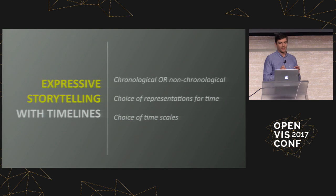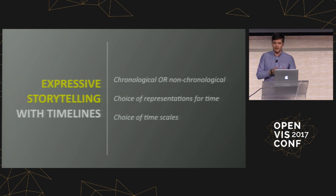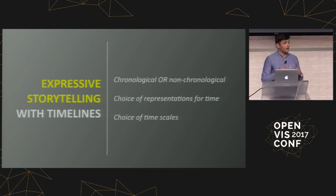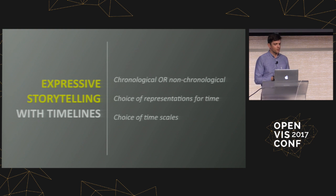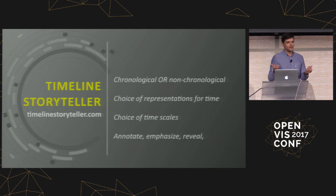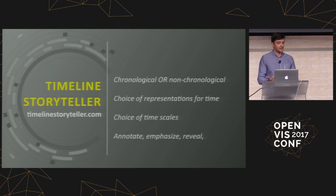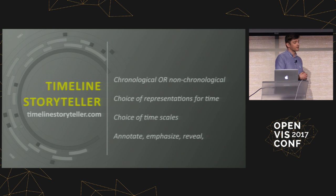If we are to tell compelling stories with timelines, our tools need to be more flexible and expressive. For some stories, a chronological introduction makes sense. But for comparing Dalí to Matisse, it may not. Our storytelling tools shouldn't be constrained to linear representations and chronological time scales. This is why we built Timeline Storyteller — an open-source presentation tool my colleagues and I released a few months ago. It's a scene-based presentation tool that runs in the web browser. In each scene, the author can choose to hide, reveal, emphasize, or annotate parts of their timeline, and choose a new representation or time scale to better suit their narrative intent.